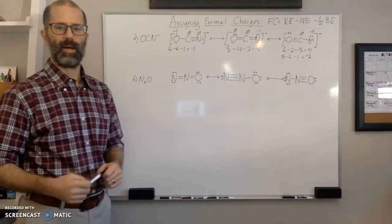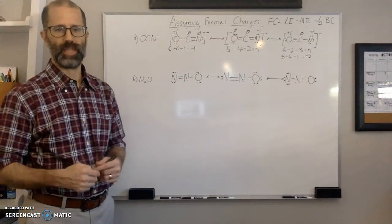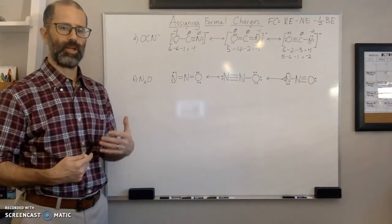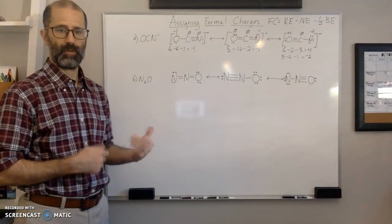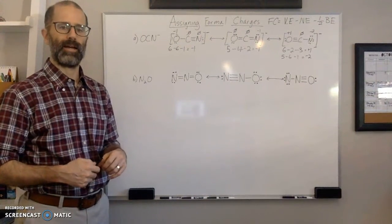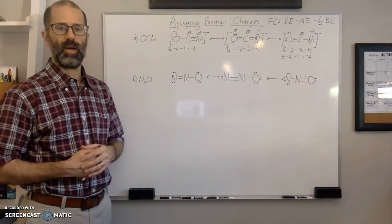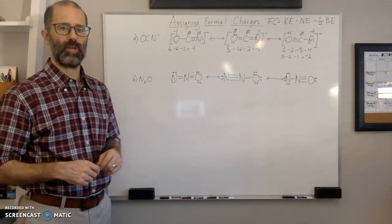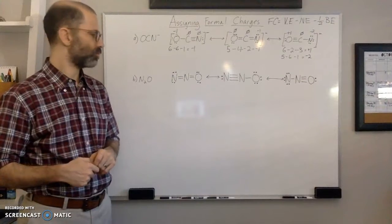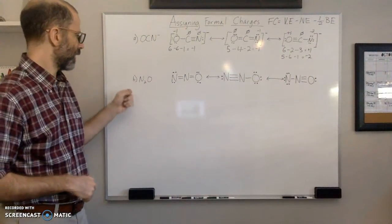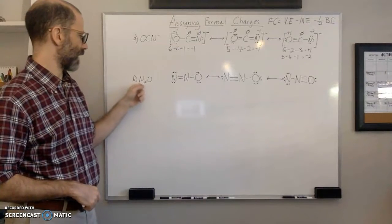Hello everyone and welcome back. I'm Mr. Cobalt and in this video I'm going to go over the second problem where I'm going to show you how to assign formal charges to the different resonance structures, and from there use the formal charges to figure out which of the three or more Lewis structures are the most important. In this case the second problem I'm going to deal with is di-nitrogen oxide.